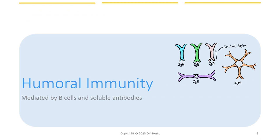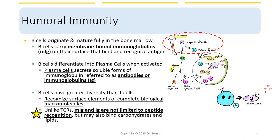When we are looking at humoral immunity, we are looking at circulating antibodies in the serum, or in the blood, or in the lymph. So we call it humoral, which means fluid. Just a little reminder from earlier lectures: B cells originate and mature fully in the bone marrow, unlike T cells, which need to gain maturity in the thymus.